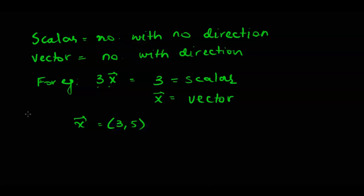This is the component form of vectors and we want to find out what is 3x. All we have to do is just write it like this. So 3 is multiplied with (3, 5).